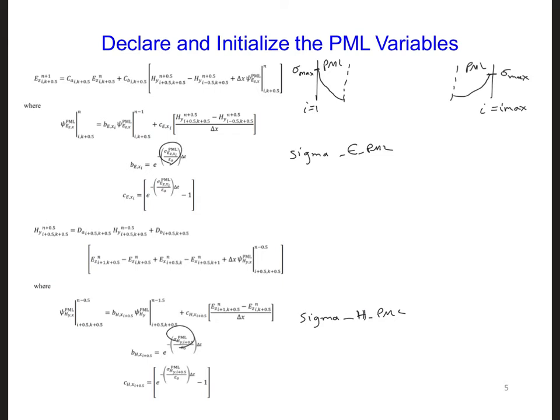And we need to also define b e c e and b h and c h arrays only in the PML region. And we need to define the psi e z, well this here it would be h y x matrix and the psi e z x matrix. The first lowercase letter, remember here, defines the orientation of the field component and the second lowercase letter, here x, denotes the absorbing direction of the PML.